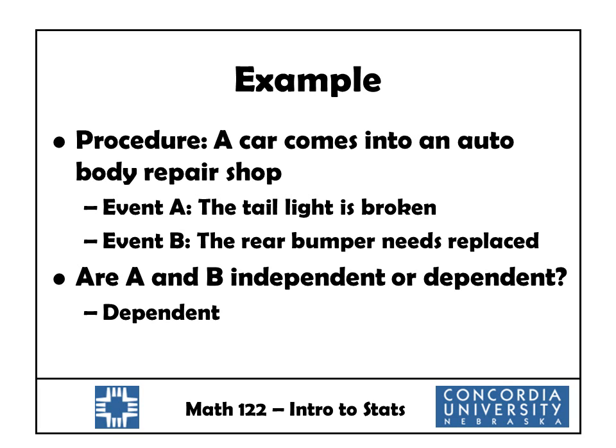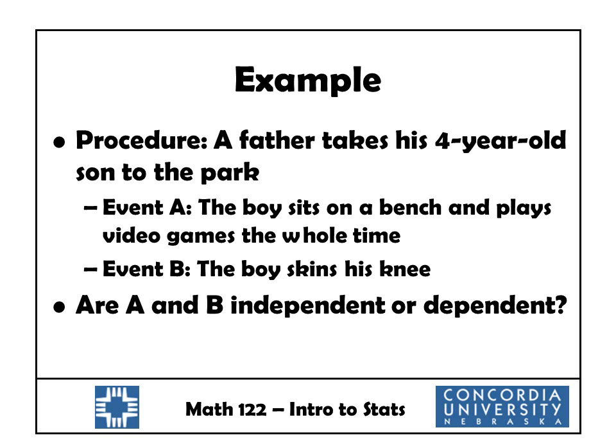Now, just because the taillight is broken does not necessarily mean the rear bumper needs to be replaced. However, the occurrence of one does make the occurrence of the other one a little bit higher probability. Another example: a father takes his four-year-old son to the park. Event A is that the boy sits on the bench and plays video games the whole time. Event B is that the boy skins his knee. Are they independent or dependent? If he sits on the bench and plays video games the whole time, it's going to be a lot less likely that he skins his knee. Likewise, if he skins his knee, that's an indication that maybe he didn't sit on the bench. So they are dependent because the occurrence of one has an effect on the probability of the other.